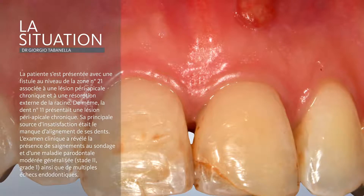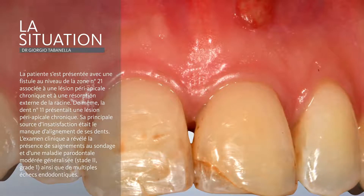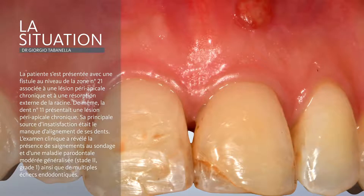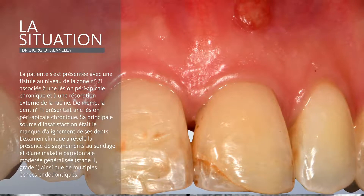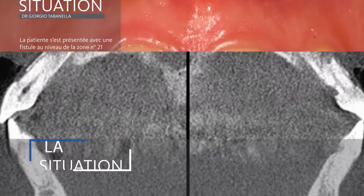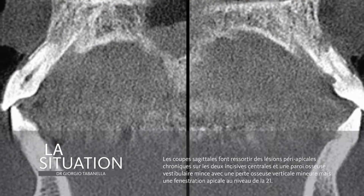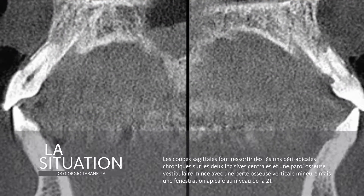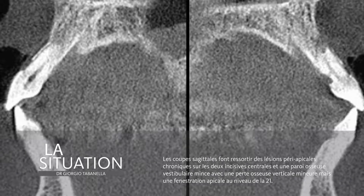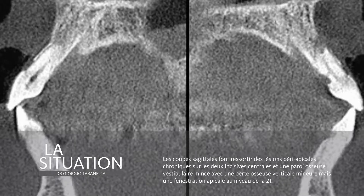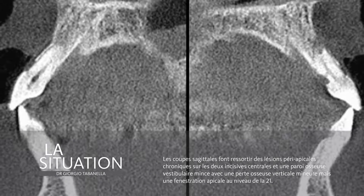This is a classic clinical situation where we're dealing with a chronic peri-implant lesion and external root resorption on both central incisors associated with a fistula. The fistula is creating also a buccal fenestration, and it's quite visible also the external root resorption on the sagittal cuts on the right-hand side towards the palatal aspect.